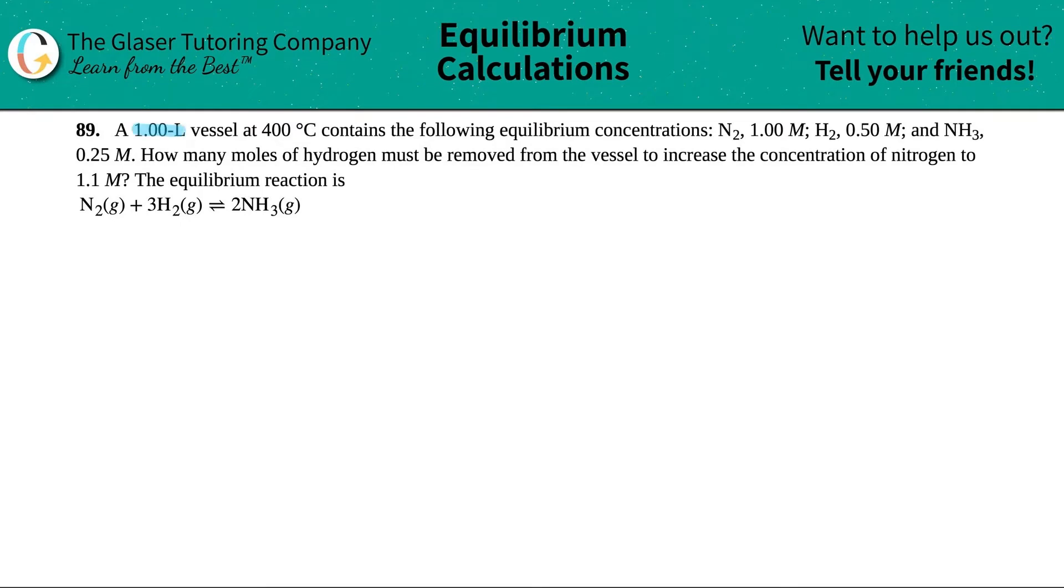Number 89. A 1.00 liter vessel at 400 degrees Celsius contains the following equilibrium concentrations. For N2 we have 1.00 molarity, for H2 we have 0.50 molarity, and for NH3 we have 0.25 molarity. How many moles of hydrogen must be removed from the vessel to increase the concentration of nitrogen to 1.1 molarity, and the equilibrium reaction is this.